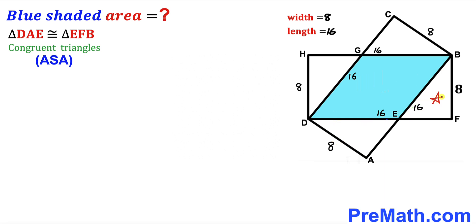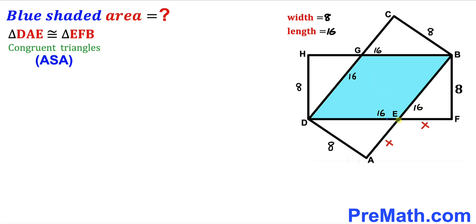Since the two right triangles are congruent, side EF equals side AE. If we label AE as X, then EF is also X. Observing the full rectangle length of 16, with segment EF equal to X, the remaining segment DE is 16 minus X.